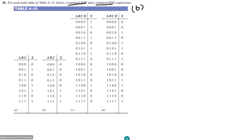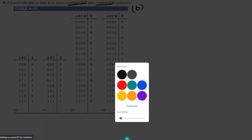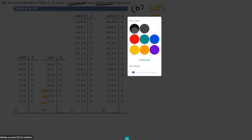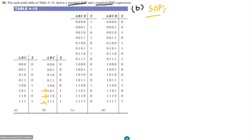Part B of our question is here. In order to find the sum of product expressions, we have to identify the terms for which the output is 1. Those terms are 101, 110, and 111.